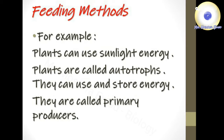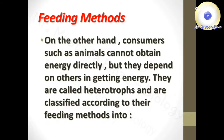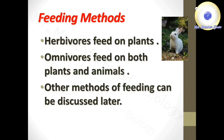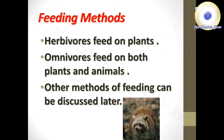For example, plants can use sunlight energy. Plants are called autotrophs — they can use and store energy, and are called primary producers. On the other hand, consumers such as animals cannot obtain energy directly but depend on others. They are called heterotrophs and are classified according to their feeding methods into herbivores, which feed on plants, and omnivores, which feed on both plants and animals.